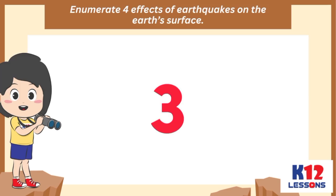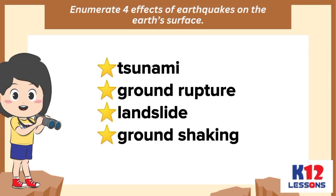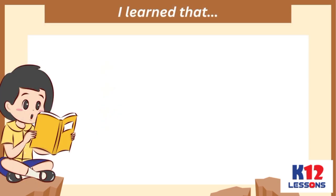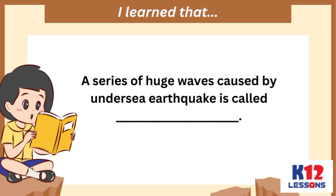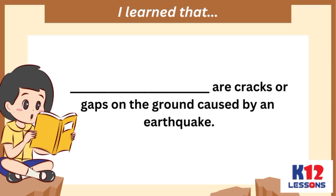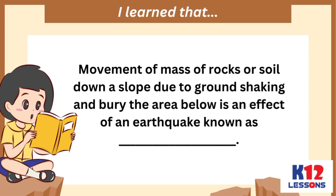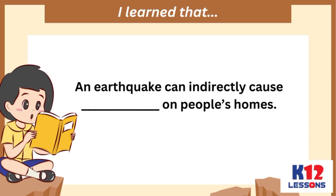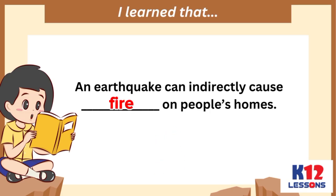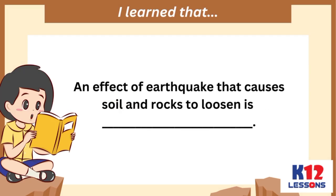Enumerate four effects of earthquakes on the Earth's surface. What I have learned: I learned that a series of huge waves caused by an undersea earthquake is called blank. Blank refers to cracks or gaps on the ground caused by an earthquake. The movement of massive rocks or soil down a slope due to ground shaking is known as blank. An earthquake can indirectly cause blank on people's homes. An effect of an earthquake that causes soil and rocks to loosen is blank.